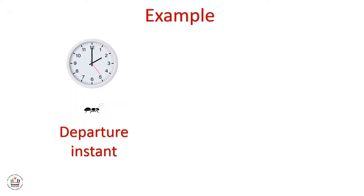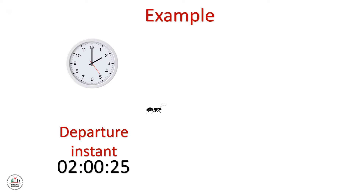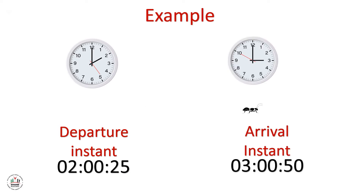Let's do the following example. This ant is on a journey. The departure time for the ant is 2:00 and 25 seconds, and its arrival instant is 3:00 and 50 seconds.